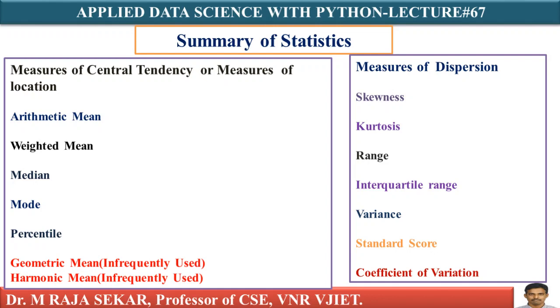Measures of dispersions include skewness, kurtosis, range, interquartile range, variance, standard score, and coefficient of variation. All these things I will discuss in future classes. Time being, just have an idea of this slide and try to understand the difference between central tendency and measures of dispersion.